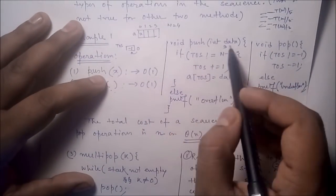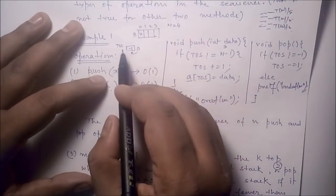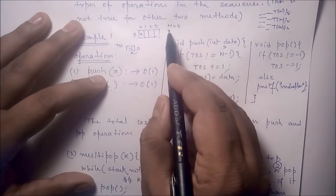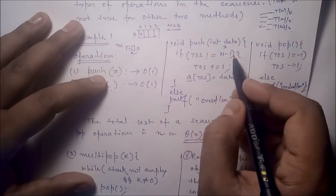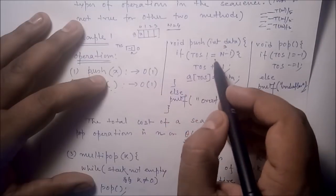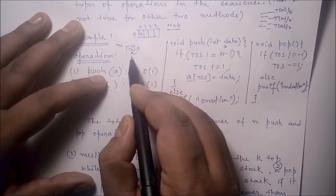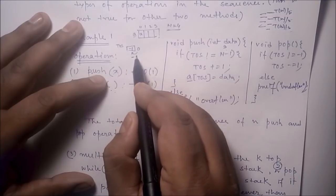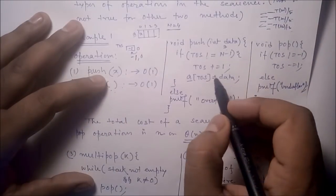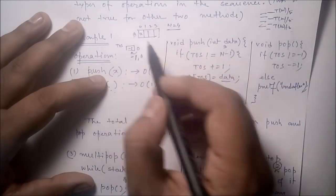Consider an array A with top of stack initially at -1, and total size N = 4, so N-1 = 3. When we apply the first push operation, top of stack is not equal to 3, so the condition is true. We increment top of stack to 0 and set A[0] = X. On the next push with data Y, top is 0, condition is true, we increment top to 1 and set A[1] = Y.